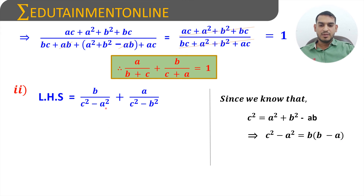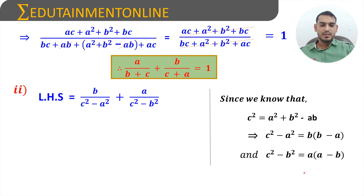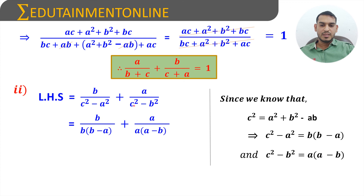So in the denominator of the first term, c² - a² can be replaced with b(b-a). From the same equation, transposing b²: c² - b² = a² - ab = a(a - b). So in the denominator of the second term, c² - b² is replaced with a(a - b).